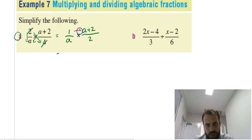Finally, we multiply the top by the top and the bottom by the bottom. 1 times A plus 2 is simply A plus 2, and A times 2 is 2A. That's as simple as it gets.